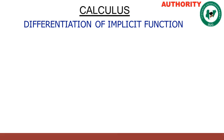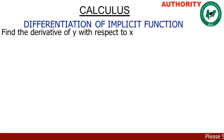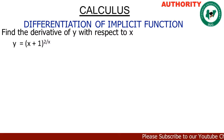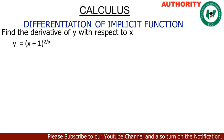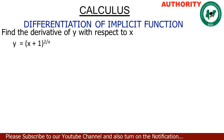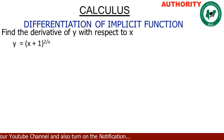All right, let's take another example under differentiation of implicit functions. This question says: find the derivative of the function y = (x+1)^(2/x) with respect to x. We are going to differentiate this with respect to x.